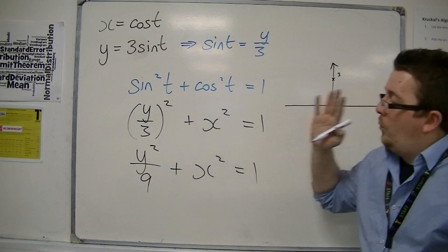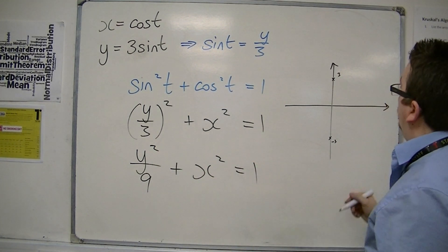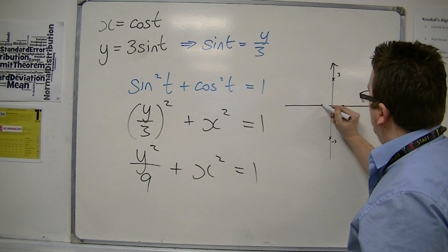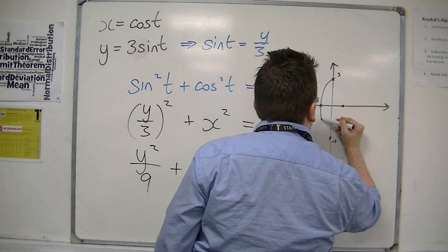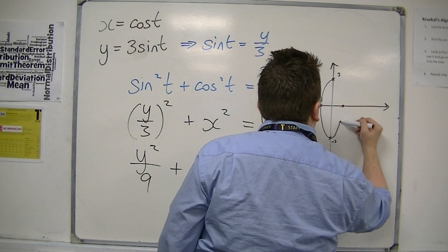When y is 0, we have x is plus or minus 1. So what you have here is an ellipse.